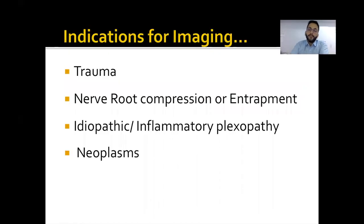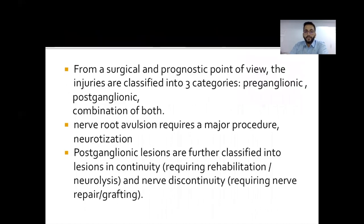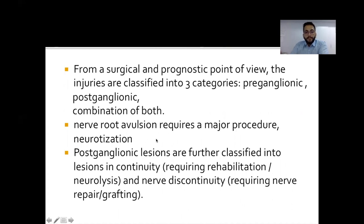Coming to the indications for brachial plexus imaging — the most common indication is trauma, followed by compression or entrapment syndromes, inflammatory brachial plexopathy, and neoplasms. From a surgical and prognostic point of view, injuries to the brachial plexus are classified into three categories: preganglionic, postganglionic, and a combination of both. Preganglionic injuries largely comprise nerve root avulsions, which require major procedures like neurotization. Postganglionic lesions are further classified into lesions in continuity, requiring neurolysis, and lesions with nerve discontinuity like nerve transection, requiring nerve repair or grafting.